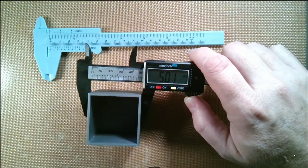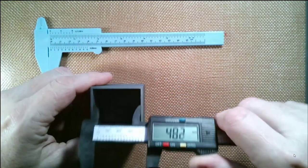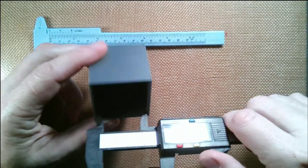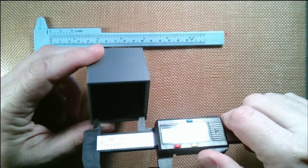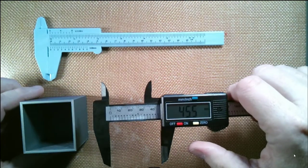That's where these inside jaws come in. I can put this inside the box, pull this out all the way, and that comes out at 45 and a half millimeters, which is just about what I would expect.